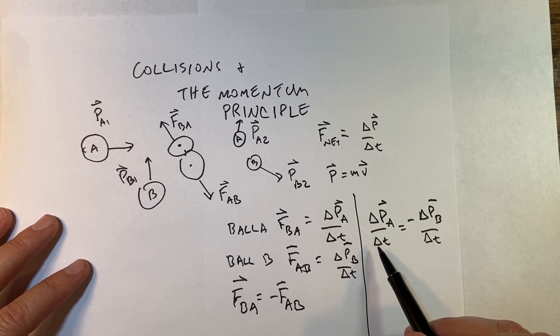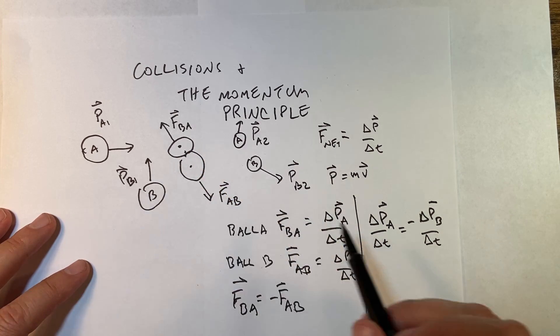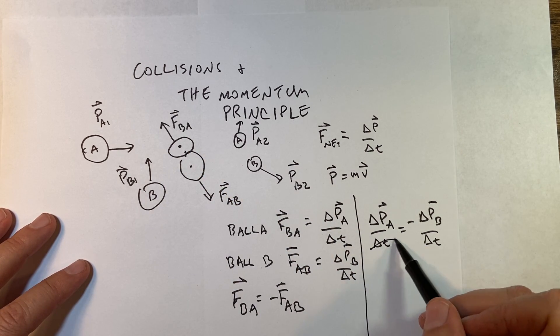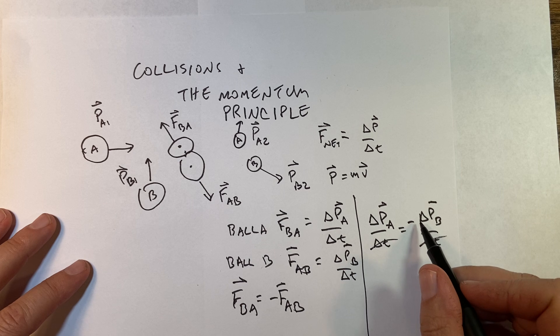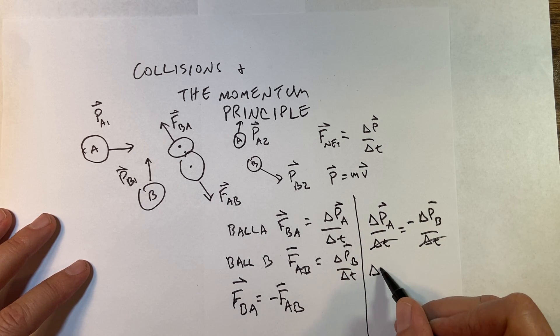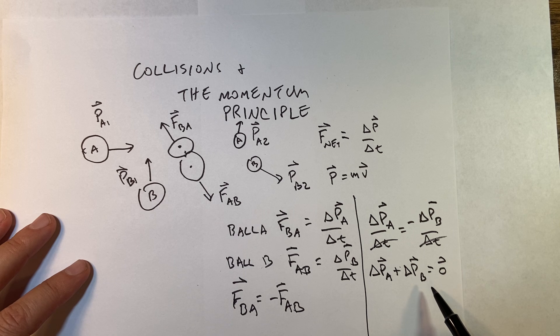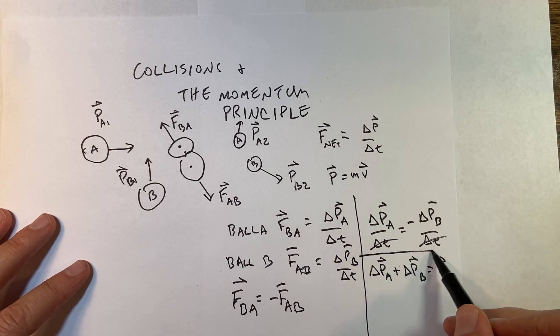And what about the time? The times are the same. A can't be pushing on B any longer or shorter than B pushes on A, so these two times are the same, so they cancel. So now I have delta p_A plus delta p_B equals zero, zero vector. This is important.